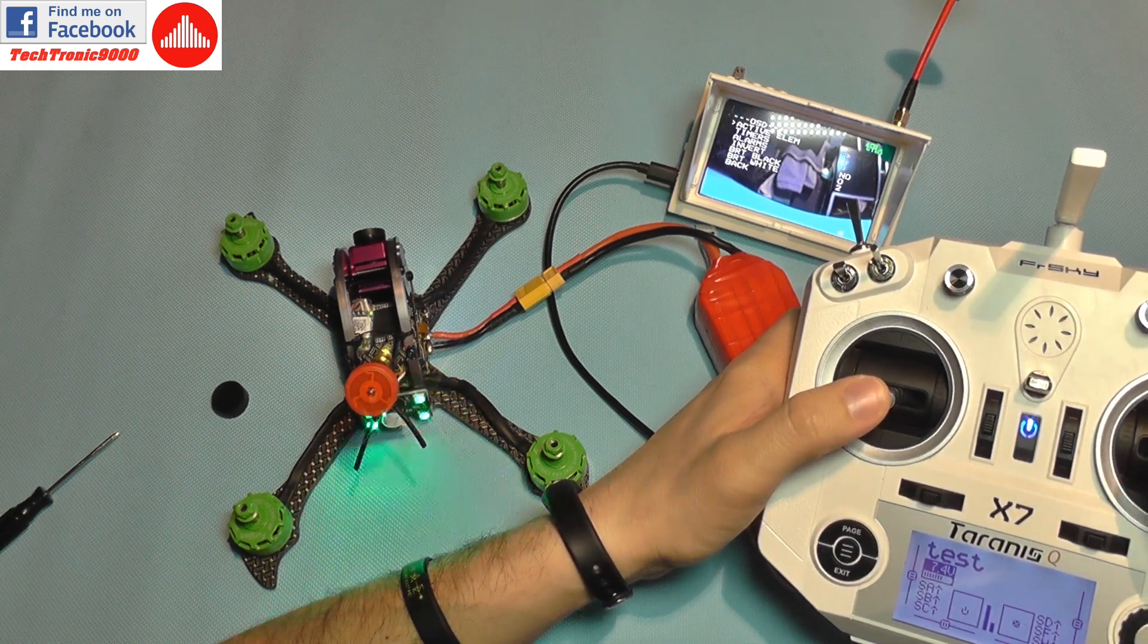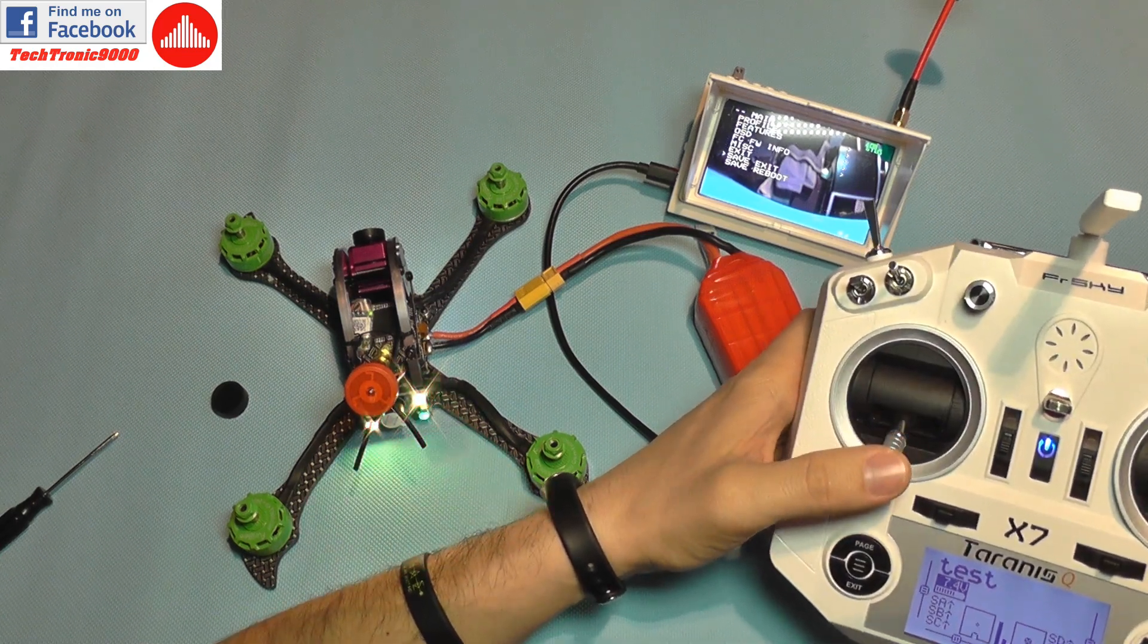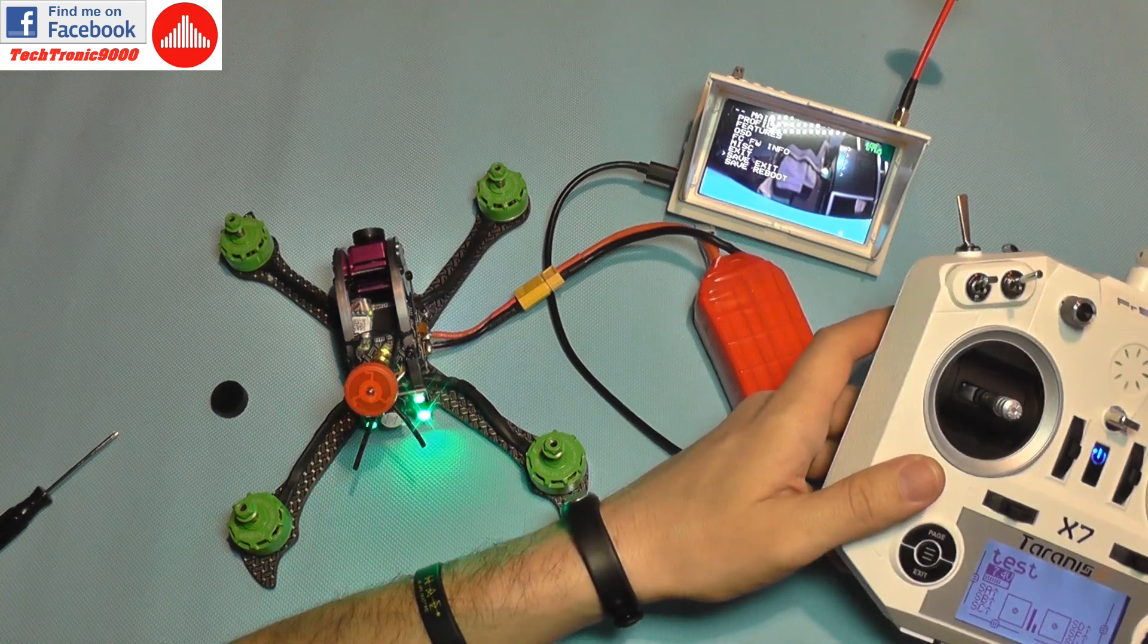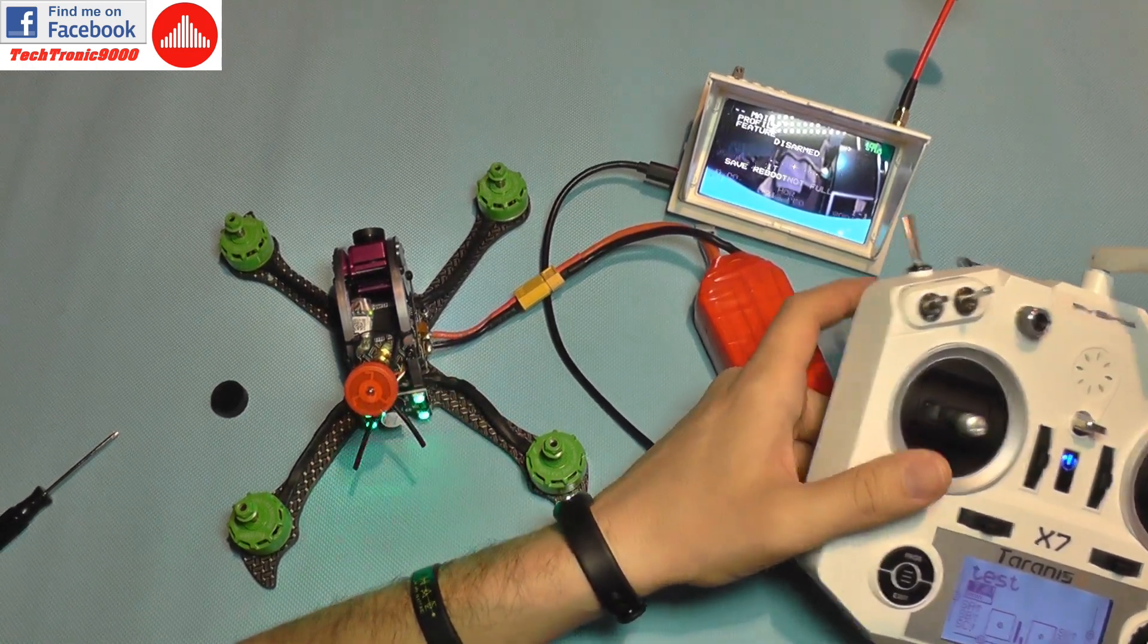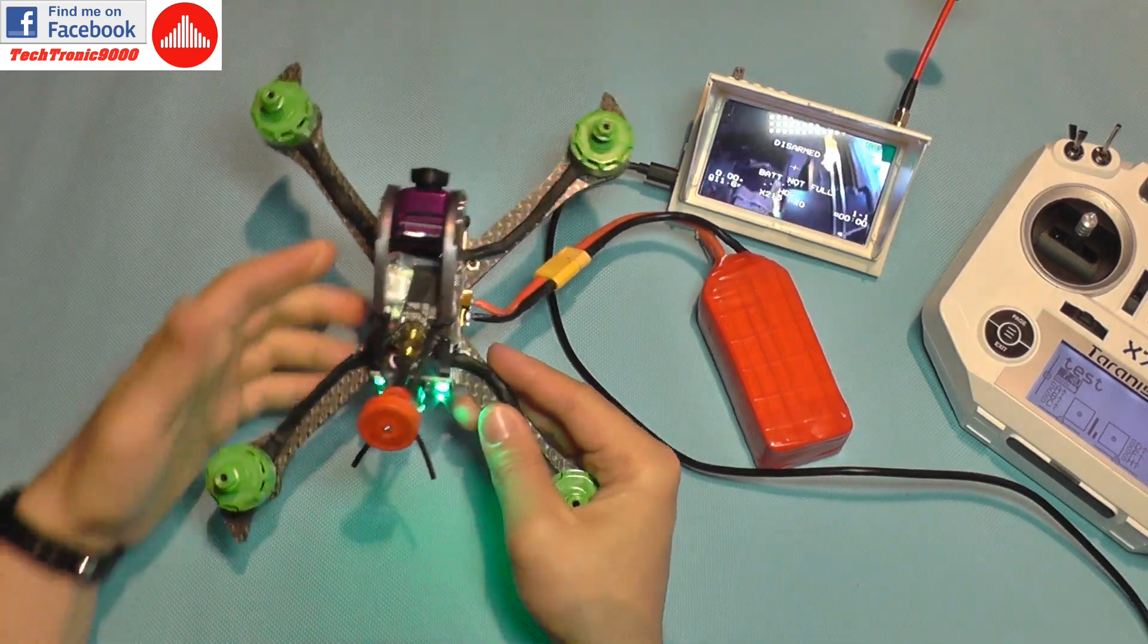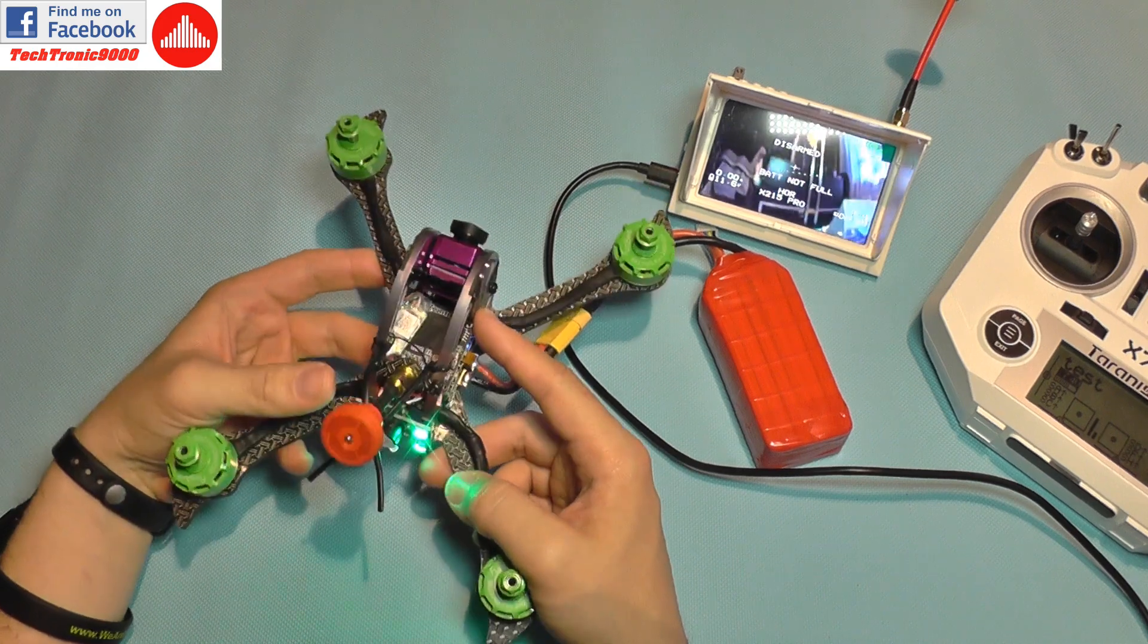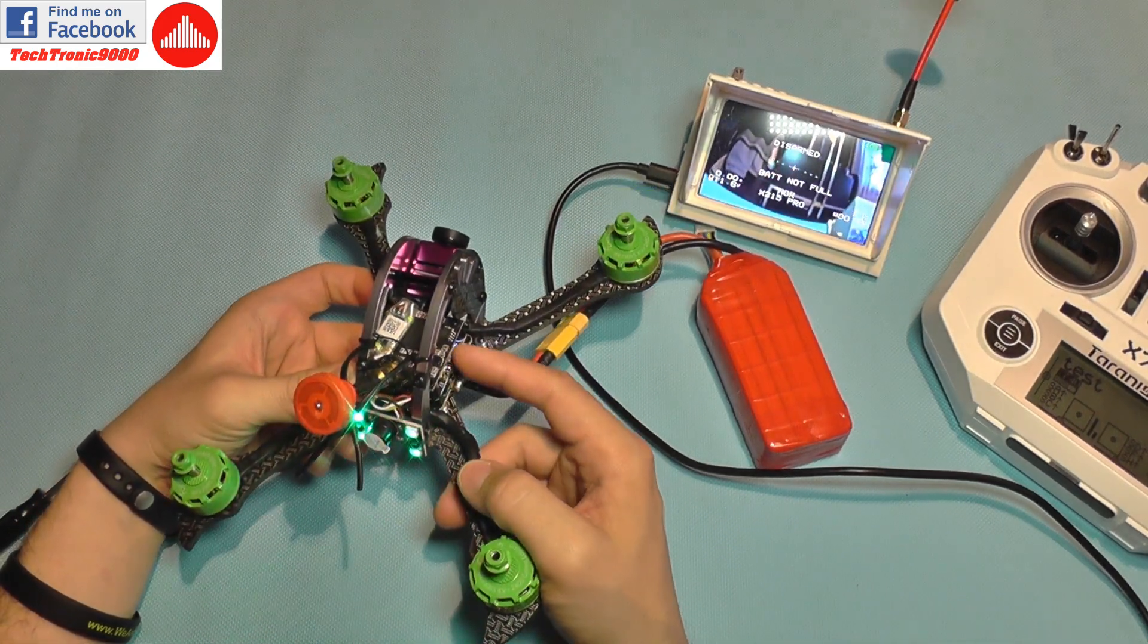All right, so I'm going to hook this up to Betaflight and do a proper setup and a transmitter setup before I go further than that. But the thing is I didn't see any kind of setting for the Furybee camera here.